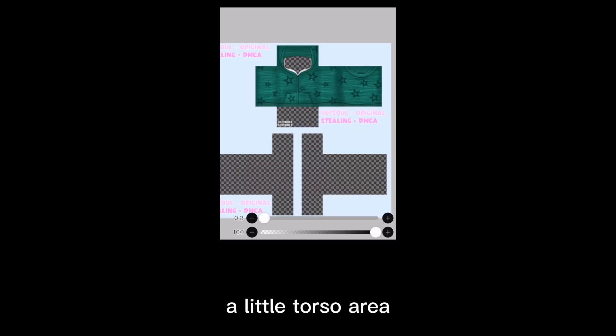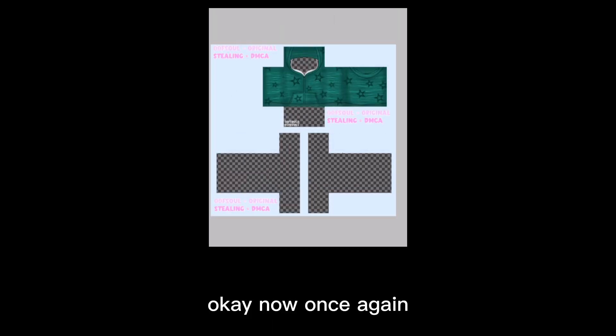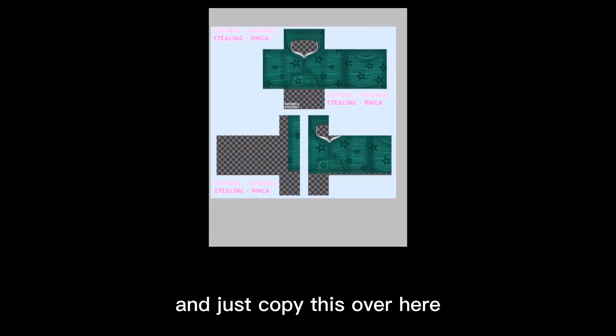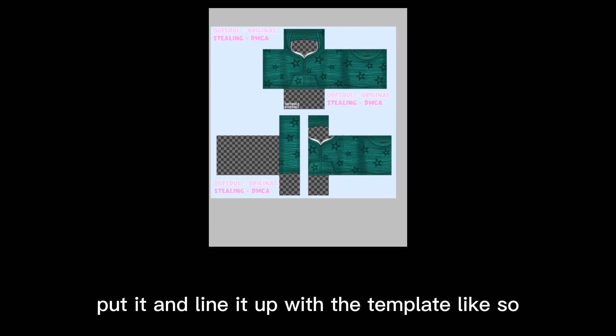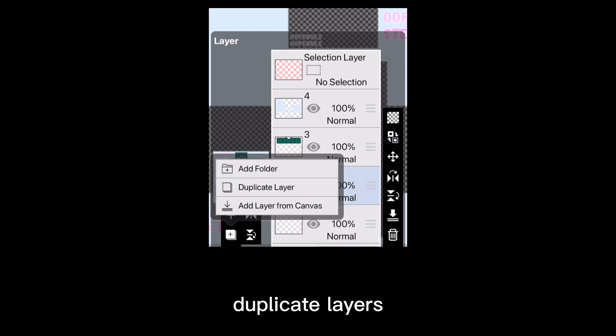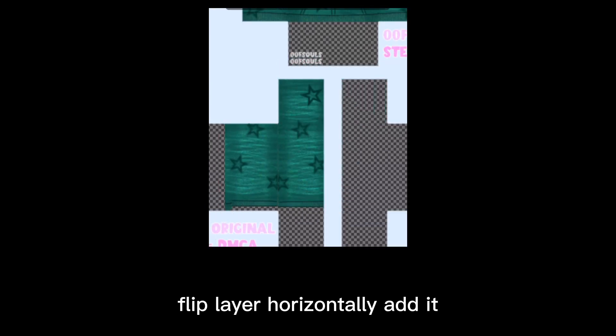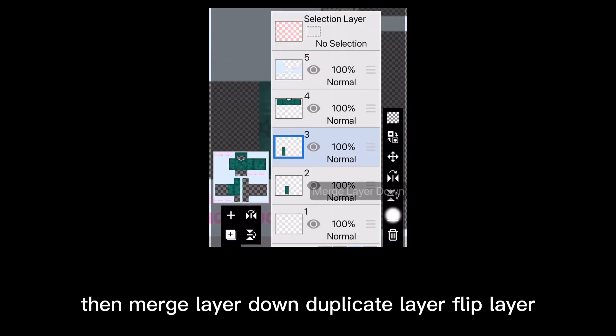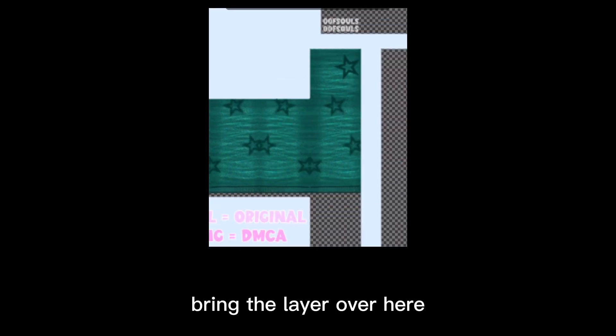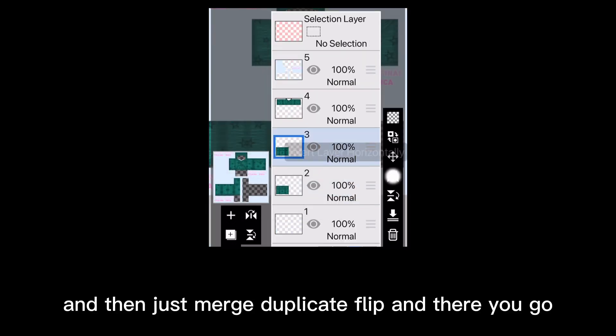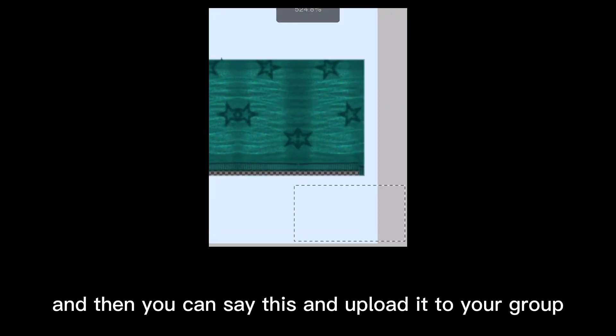So there you have your little torso area. Once again, you have to add a layer under all your image layers and you're just going to copy this over here, put it and line it up with the template. Take your little eraser, remove it, duplicate layers, flip layer horizontally, add it, touch up, do some touch ups on it. Then merge layer down, duplicate layer, flip layer, bring the layer over here. Then you can save this and upload it to your group.